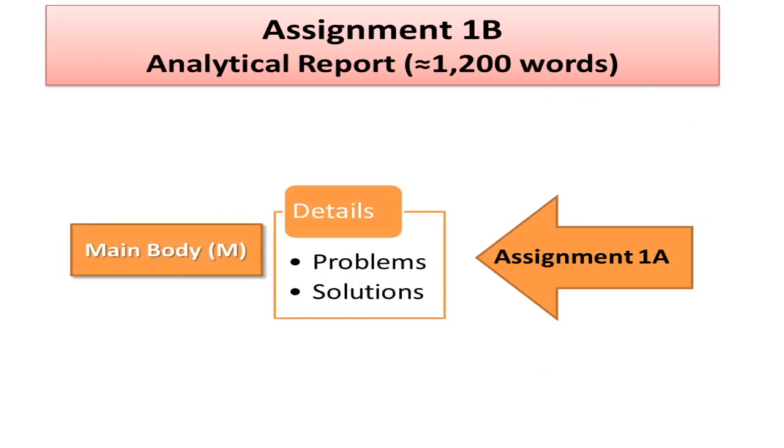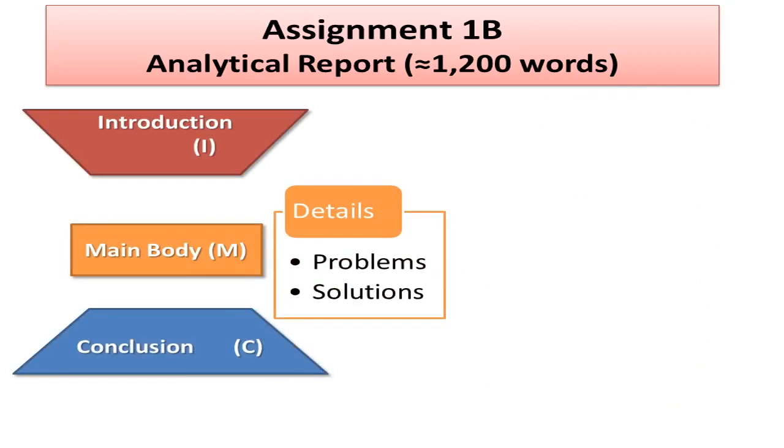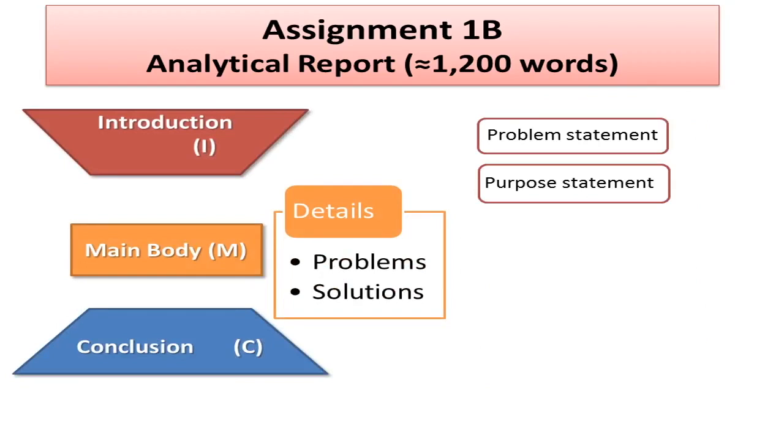So, for Assignment 1B, you may wish to edit what you drafted in Assignment 1A, expanding on some points and adding some details here and there. To complete the rest of Assignment 1B, you just need to write a good introduction and a conclusion. The introduction needs to be short, because you want to save the words for the main body. In the introduction, you can include an opening paragraph, which should end with a problem statement, also called a thesis statement. There, you highlight the problem or problems you are going to discuss in the main body. After the problem statement, you can write your purpose statement, where you tell your reader what this report tries to achieve.